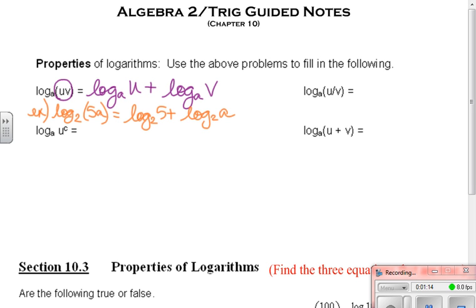If I'm dividing inside, then what happens is I subtract. So I have log base a of the numerator minus the log, whatever the base is, of the denominator. But it's always the numerator first.